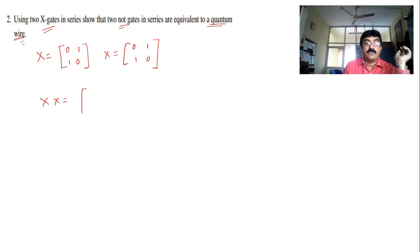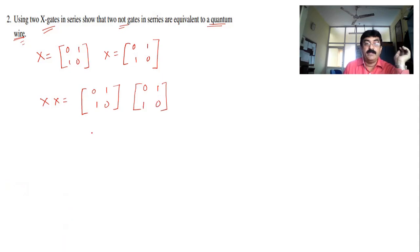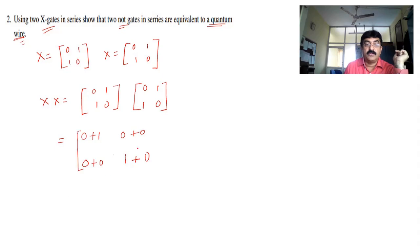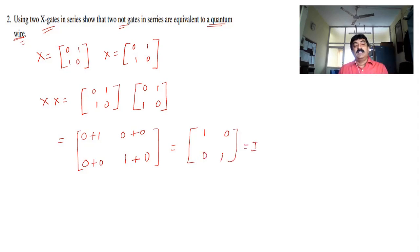So X×X equals [0, 1; 1, 0] times [0, 1; 1, 0]. Multiplying: first row, first column = 0+1 = 1; first row, second column = 0+0 = 0; second row, first column = 0+0 = 0; second row, second column = 1×1 + 0×0 = 1. That gives [1, 0; 0, 1] — the identity matrix. This is called a quantum wire. When two identical X gates are multiplied you get a single line — the quantum wire — which is the identity matrix.